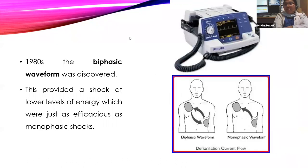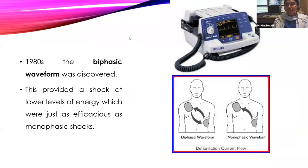In the 1980s, the biphasic waveform was discovered. This provided a shock at lower levels of energy which were just as efficacious as the monophasic shock. The differences between biphasic and monophasic waveforms will be explained in detail in the coming slides.